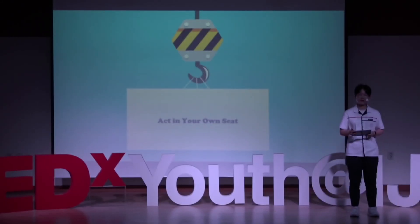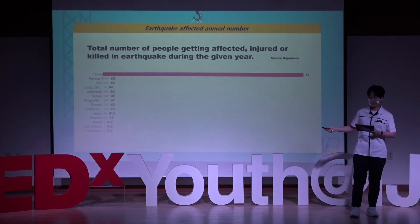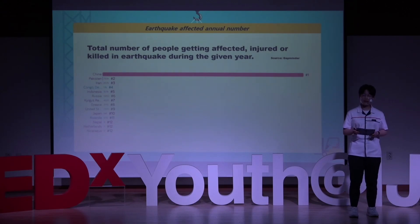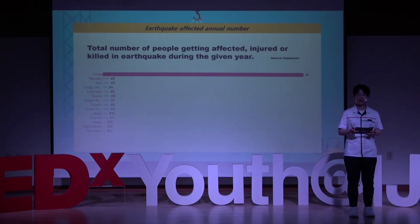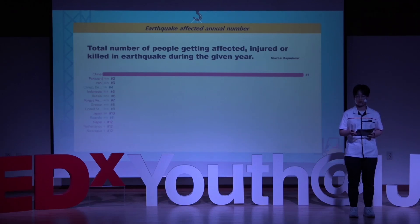Do you know how many people are getting injured or killed in earthquakes during a year? In China, 47.2 million people are. Of course, there are many excellent earthquake-resistant designs in China. But for those who are living in provincial single-story houses, or who can't even dream of earthquake-resistant designs, earthquakes are just a disaster that destroys their homes.